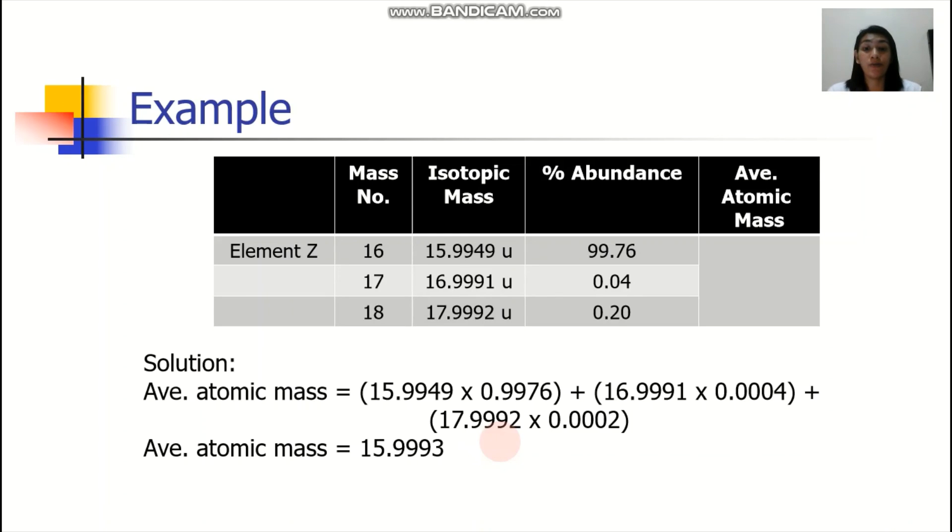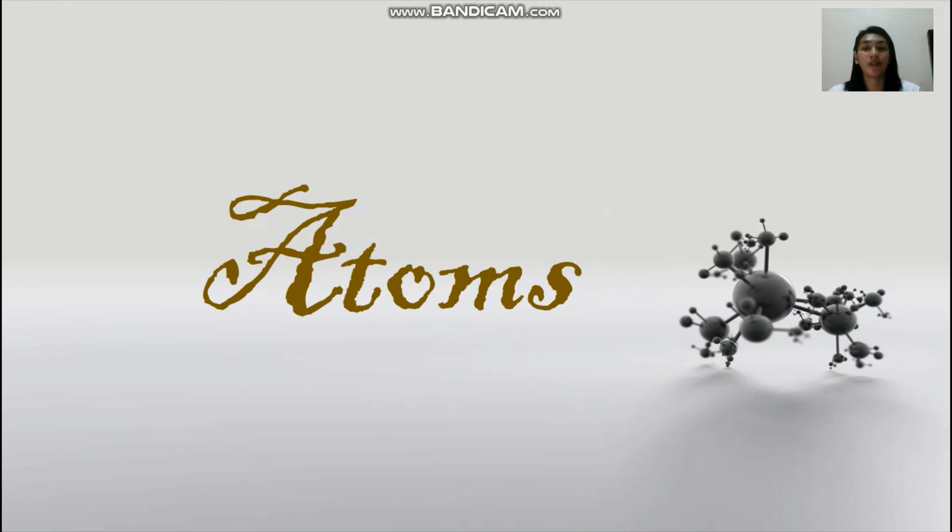Now, this one is for you to try. Actually, nabigay ko na pala yung solution. But now, here, I have three elements. I mean, three isotopes. We have 16, 17, and 18. Provided are the different isotopic mass and abundance. Madali lang naman mag-compute ng average atomic mass because the data would be provided. You simply multiply now the isotopic mass with this percentage abundance. You add them up and you have your average atomic mass.